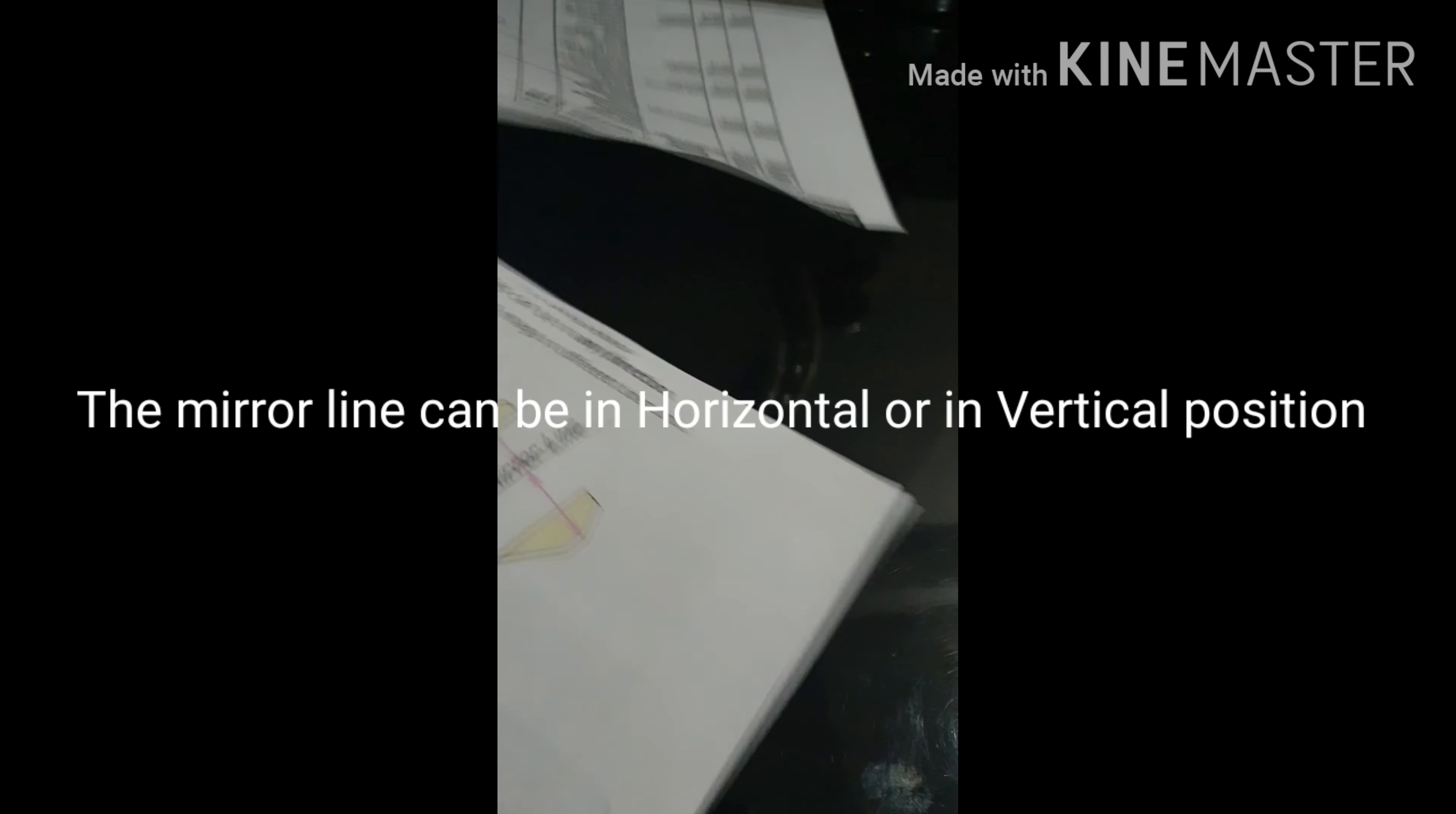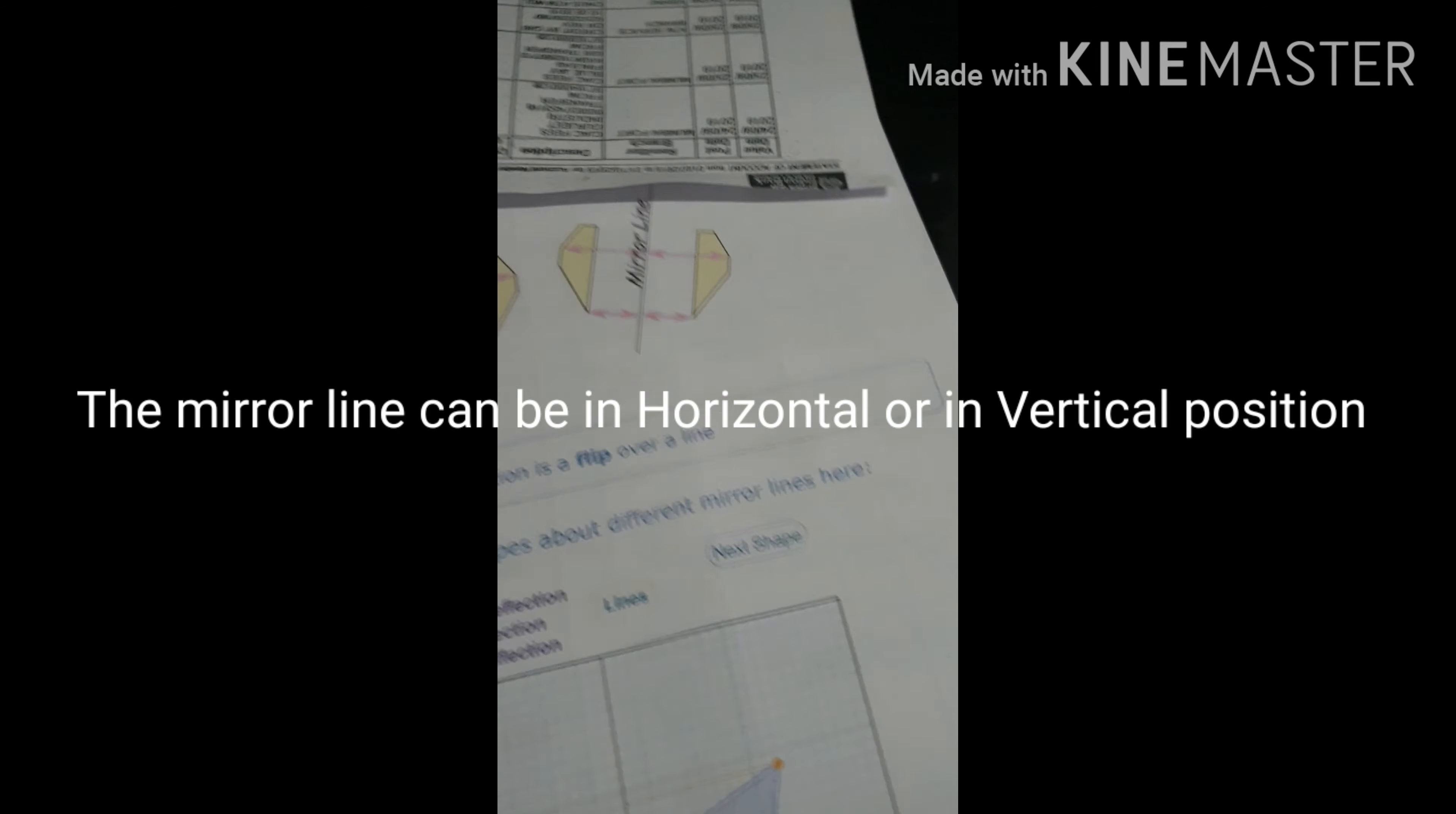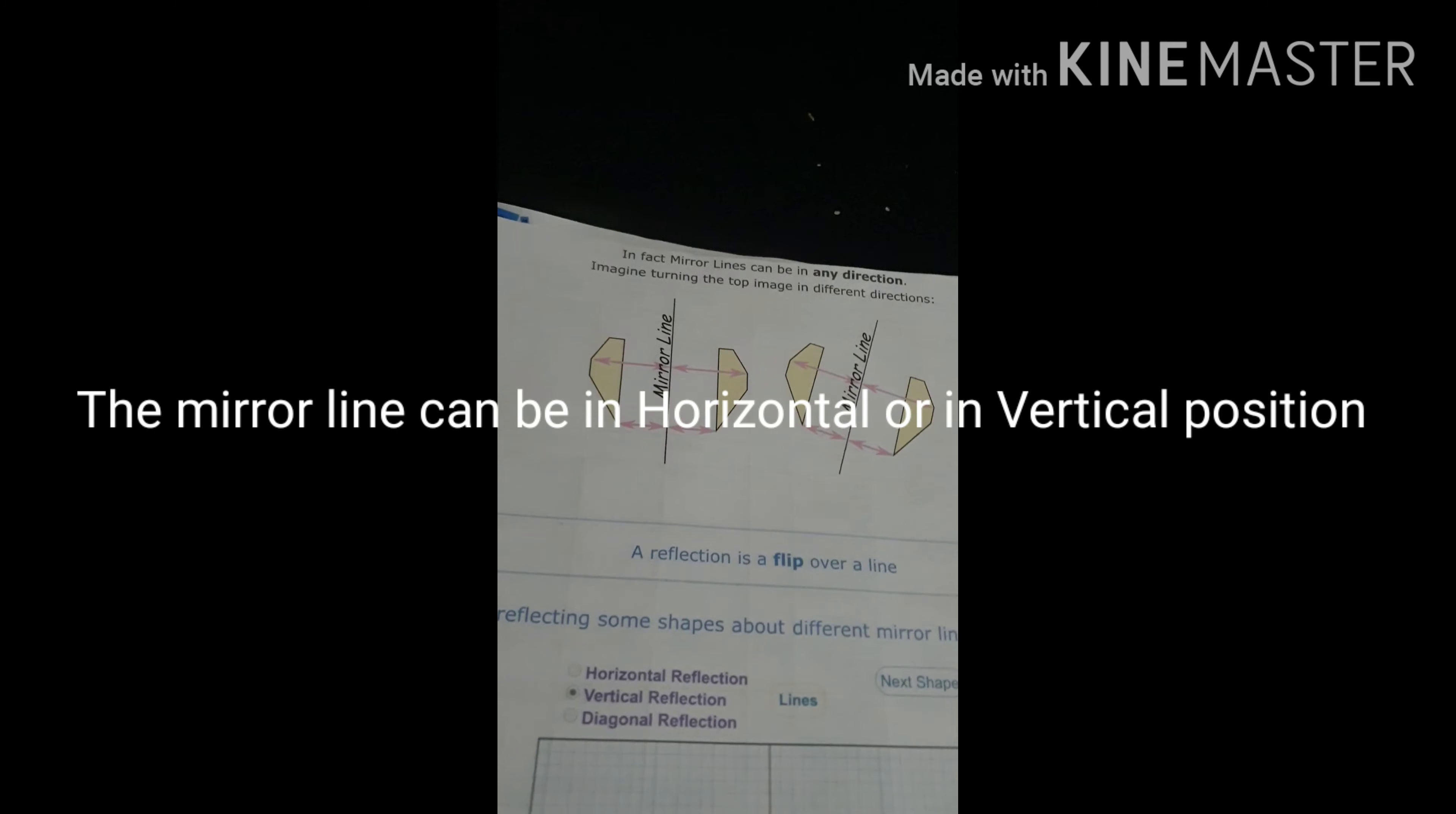if the tip is coming on top, in the same manner you will be able to see the object which is formed. So basically, the object which we get after the reflection depends upon the mirror line.